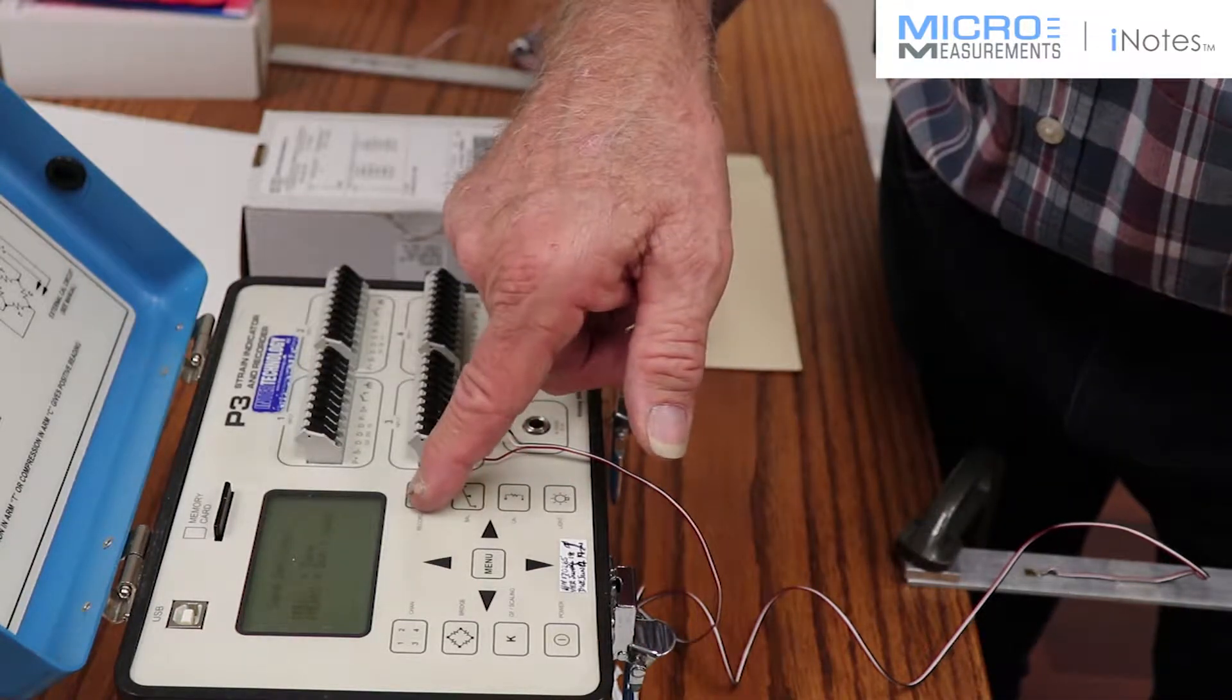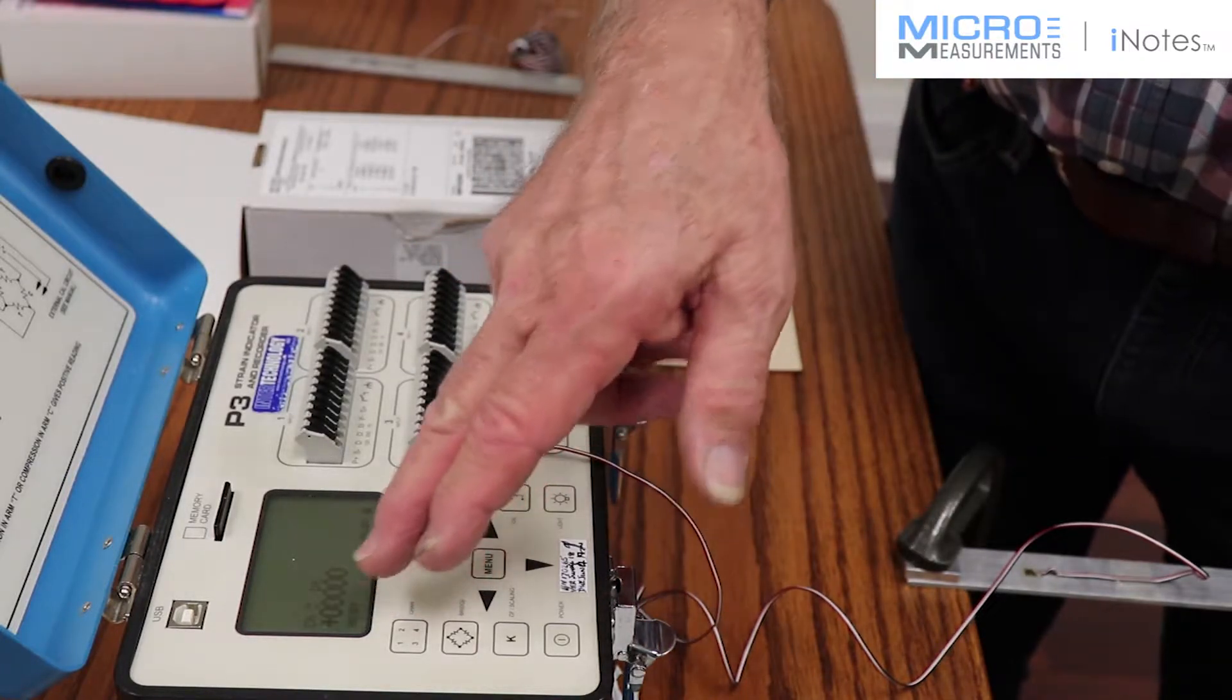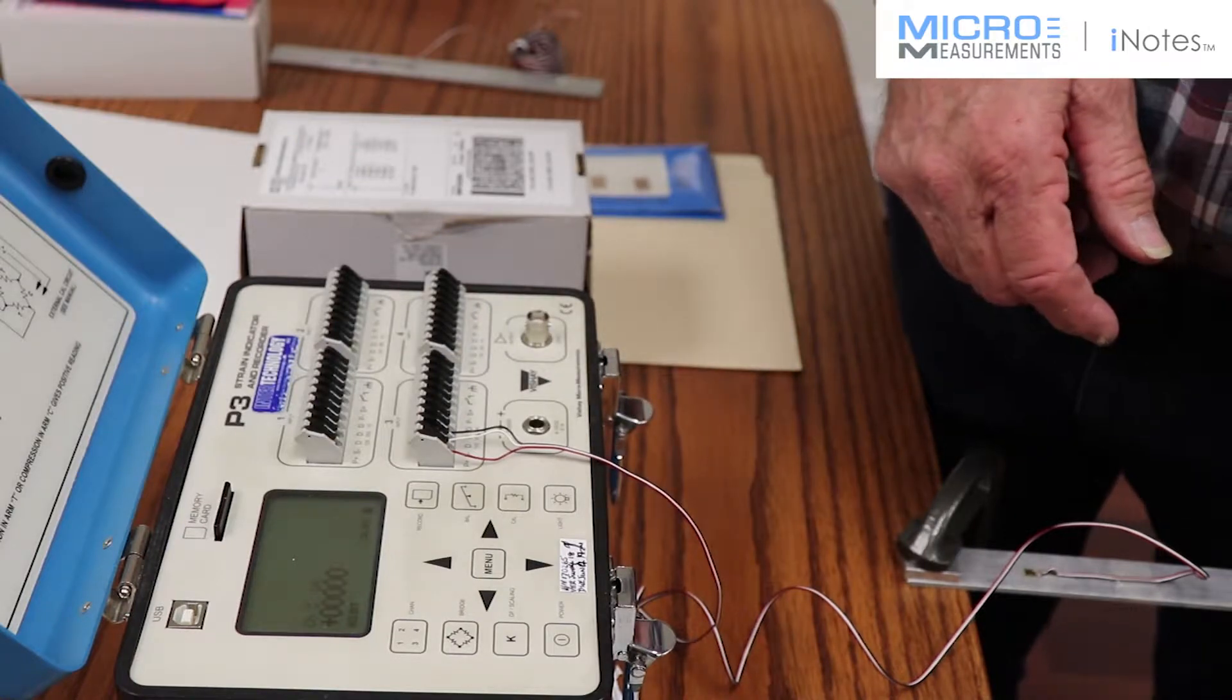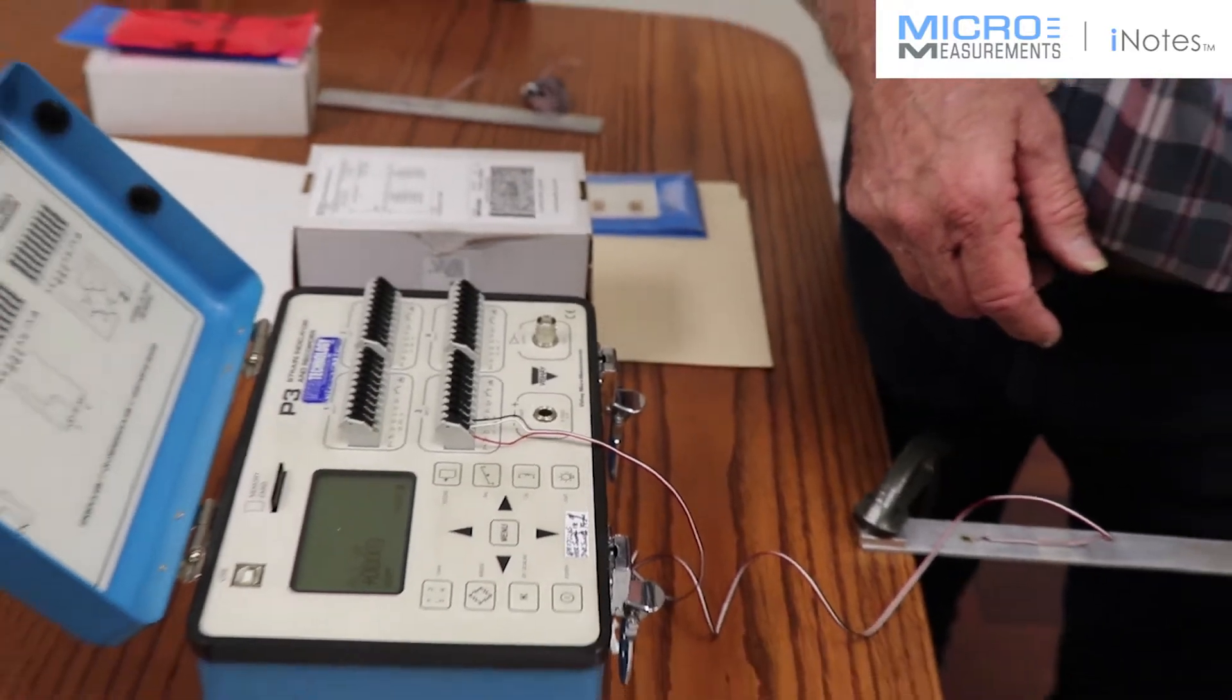And I'm now going to record it to save the information. So we see now that we have a zero balance of micro strain. If I touch the beam here, I can activate it; it can give me plus or minus.